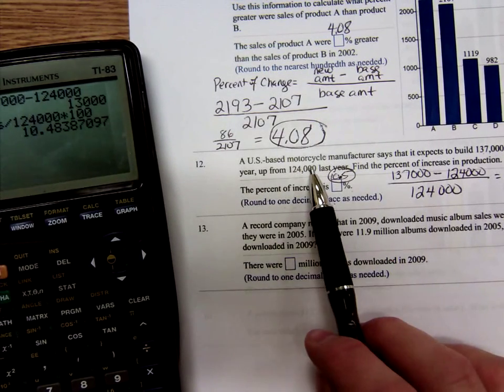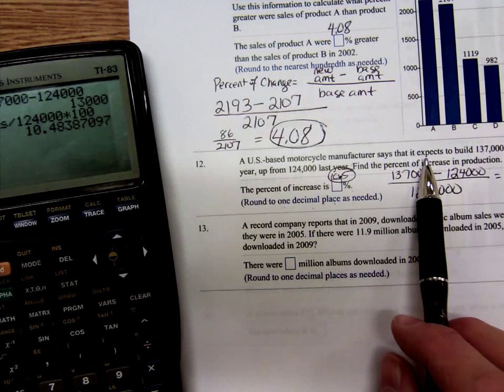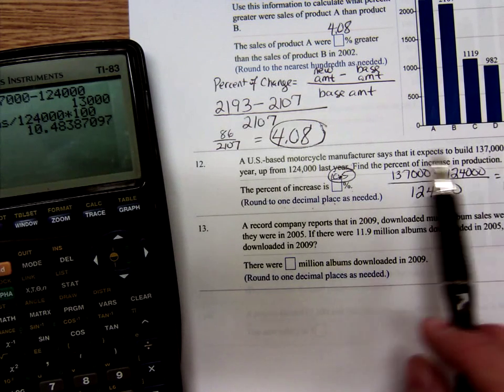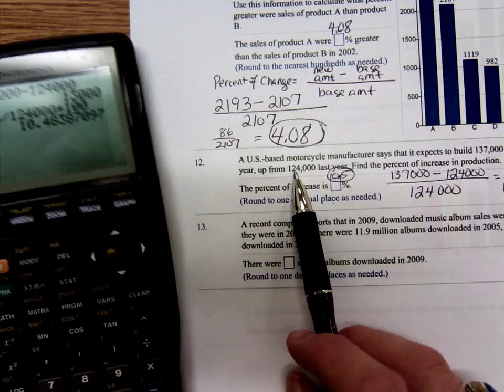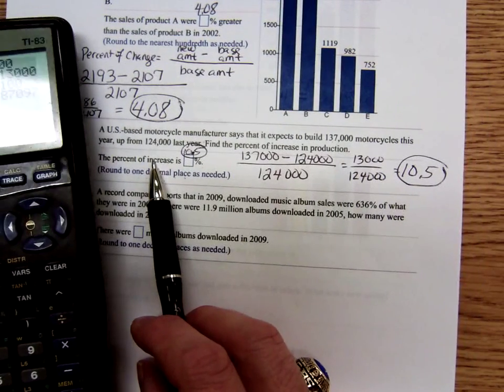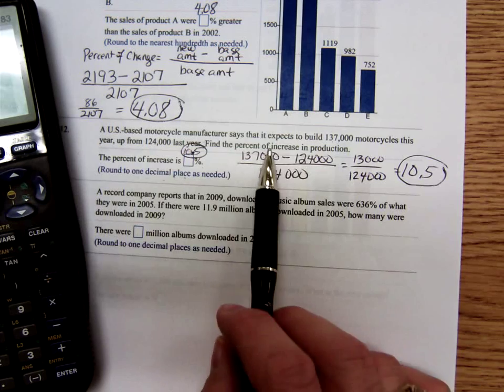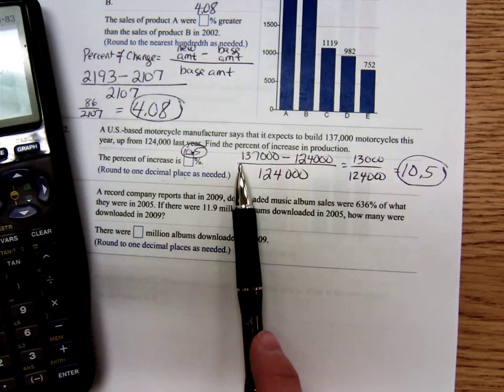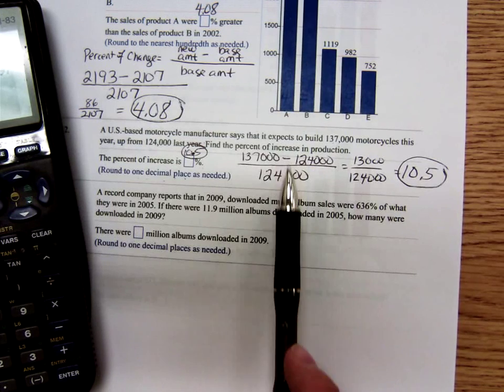The motorcycle manufacturer says it expects to build 137,000 motorcycles this year, up from 124,000 last year. Find the percent of increase in production: new amount minus that base amount divided by that base amount.